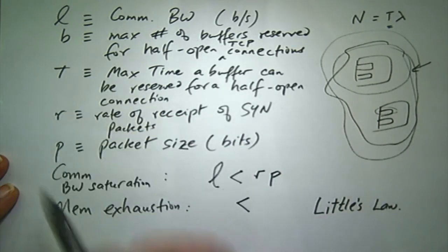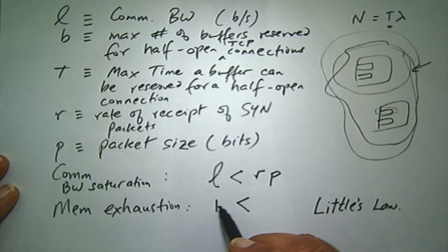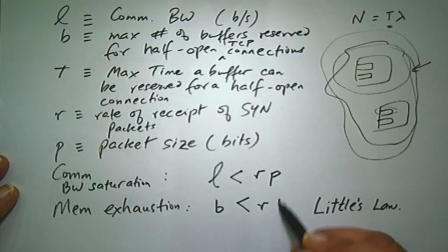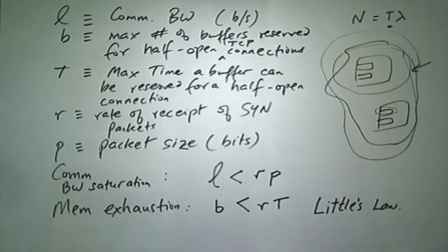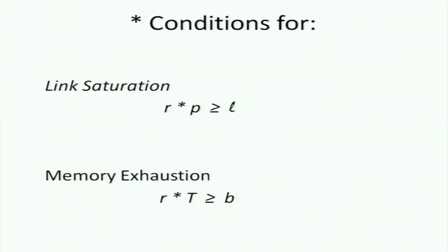If I apply Little's Law in this context, I get the condition for memory saturation or memory exhaustion: B ≤ R × T. There are not enough memory buffers to hold all incoming requests. This law is known as Little's Law — L-I-T-T-L-E. You'll see it in most computer networking textbooks, such as Gallagher's, which is rather mathematical, and it appears frequently in queuing theory.